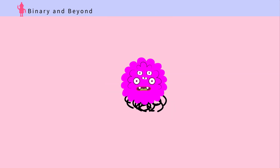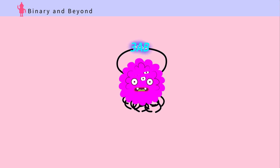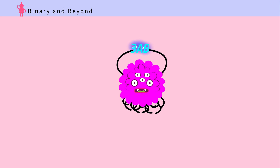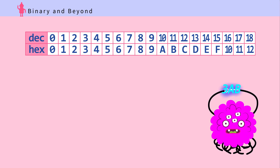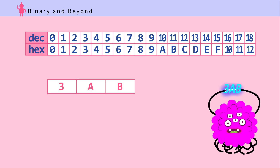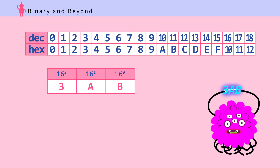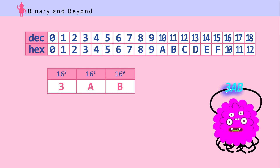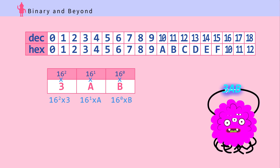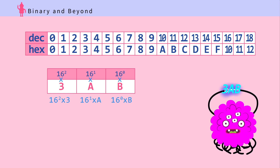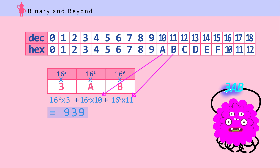Hi, sir. How many aliens are in your spaceship? There are 3AB. How many is that? This alien uses a hexadecimal system. Let's see what 3AB is in base 10, or decimals. Step 1: Lay out each number — 3, A, and B. Step 2: Put the place value on top of each hex number. From the very right, it is 16 to the 0, 16 to the 1, 16 to the 2. Step 3: Multiply the places with its hex numbers. Step 4: Add them all up. There are 939 aliens in the spaceship.